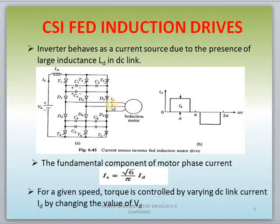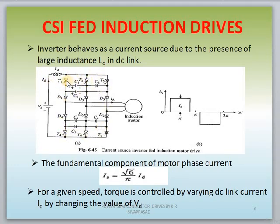Next is the circuit diagram of CSI fed induction motor drive. Here a large value of inductor is connected in series with a voltage source, which acts as a current source producing a current value of ID. The circuit also consists of six thyristors T1, T2, T3, T4, T5, T6. In addition, we have diodes and capacitors, which work as a forced commutation circuit to turn off and turn on the thyristors.